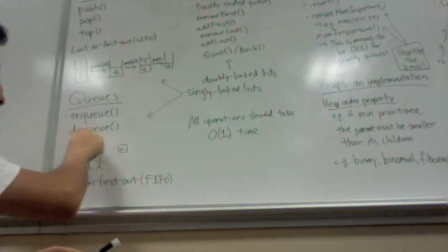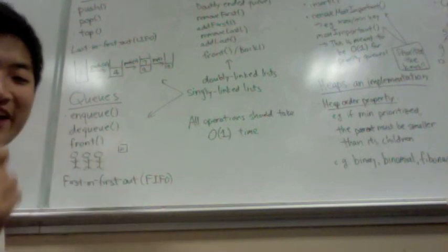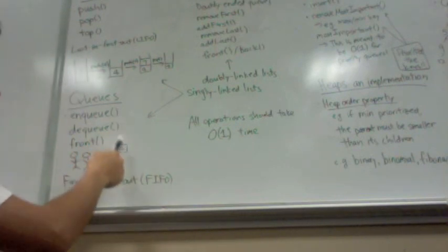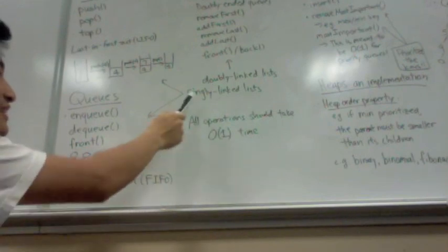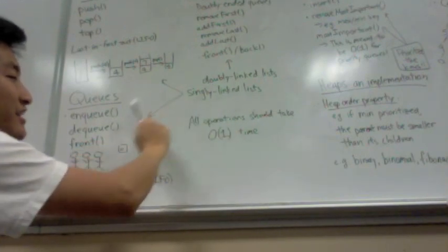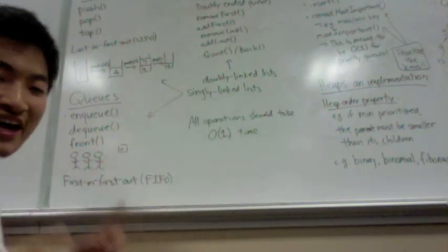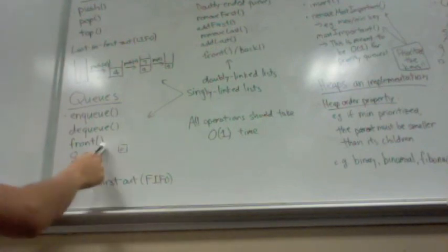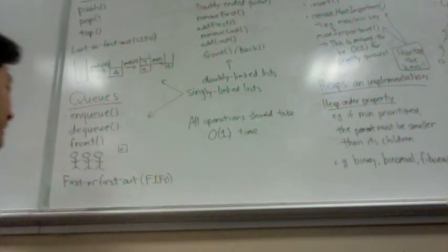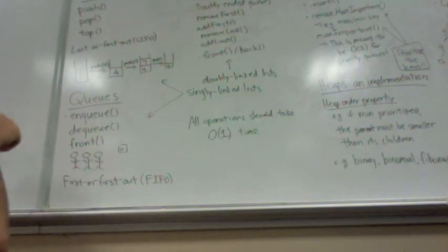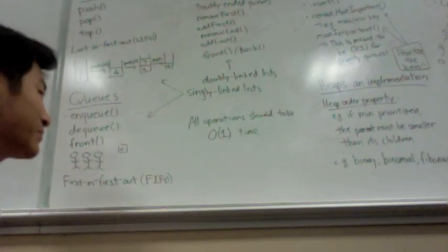When you implement queues with a singly linked list, you want to have a head and a tail pointer. And front is basically allowing you to check which element's at the very front. Think of it as a few people waiting in line. It's that simple.